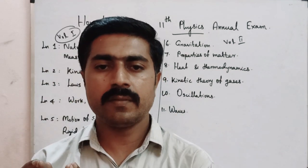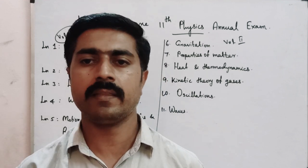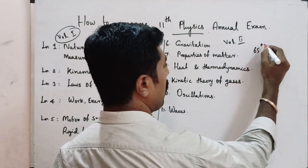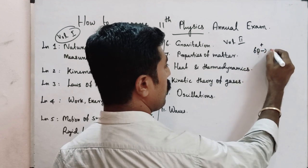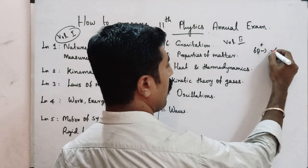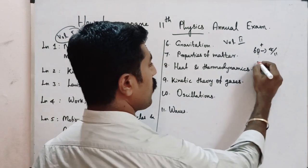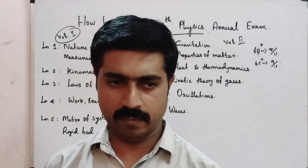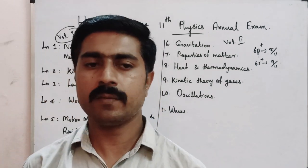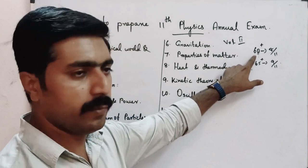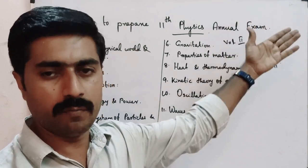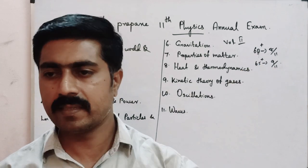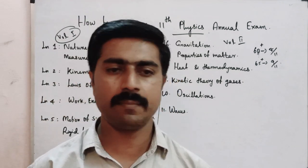So if you want 65 plus or 60 plus marks, you should choose a minimum of 8 lessons out of 11. For 65 plus you need 9 lessons. To score 60 and above, you will cover 8 lessons; for 65 and above, a minimum of 9 lessons. You may skip some lessons, but you must cover the important ones.